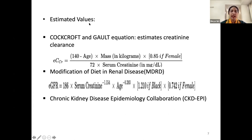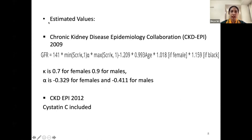For day-to-day management of these patients, we use estimated values. Several formulas are available. The most common is the Cockcroft-Gault formula, which estimates creatinine clearance using serum creatinine, age, body weight, and gender. More commonly we now use the Modification of Diet in Renal Disease (MDRD) formula, and since 2006, the CKD-EPI (Chronic Kidney Disease Epidemiology Collaboration) values, which give a better estimation of GFR compared to the previous two formulas.